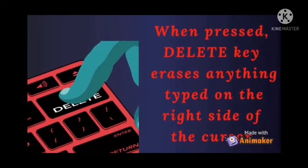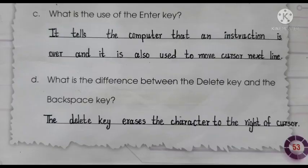Now let's learn about the Delete key. When you press the Delete key, it erases anything typed on the right side of the cursor. For example, if I want to correct the spelling of the word 'monitor,' I will place my cursor after the letter O and press the Delete key. It will delete the letter R that is on the right side of the cursor. If I further press the Delete key, it will continue deleting the letters on the right side.